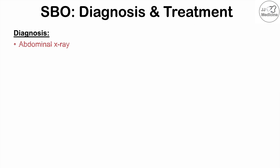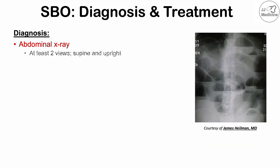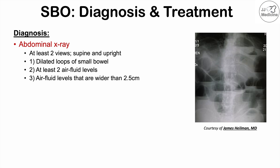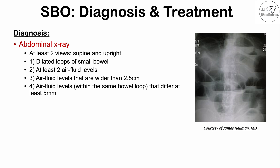Diagnosis can be made by abdominal x-ray, with at least two views — supine and upright. Findings include dilated loops of small bowel, at least two to three air fluid levels, air fluid levels wider than 2.5 centimeters, and air fluid levels within the same bowel loop differing by at least 5 millimeters. Absent or minimal colonic gas — very little gas in the large intestine — is also a significant radiographic finding.